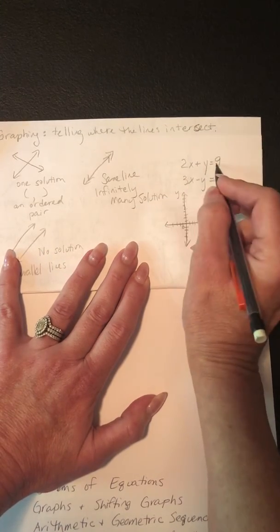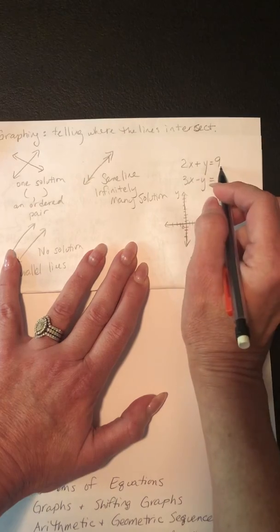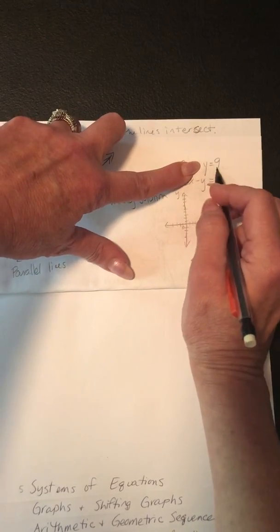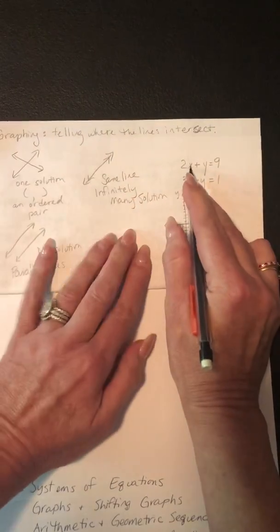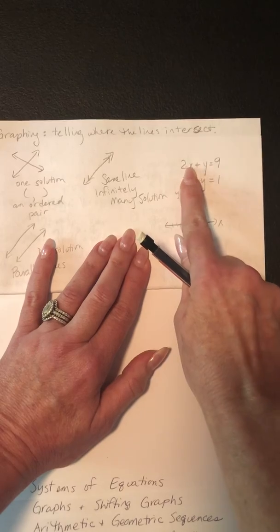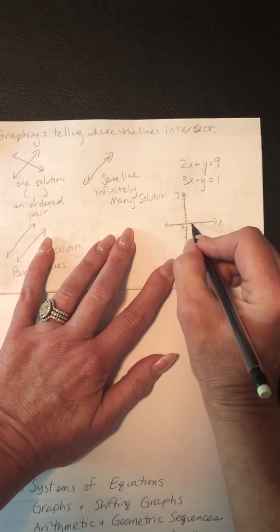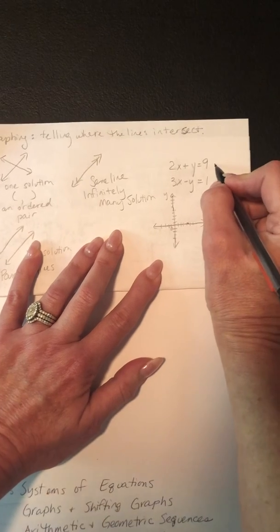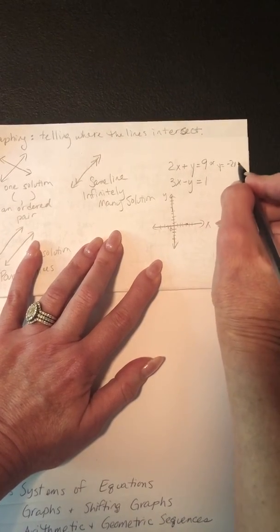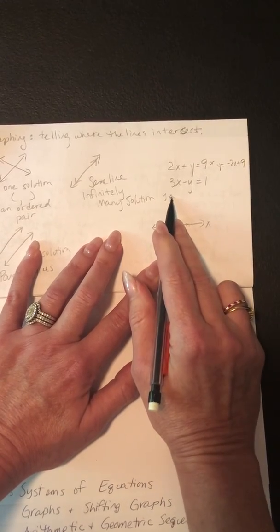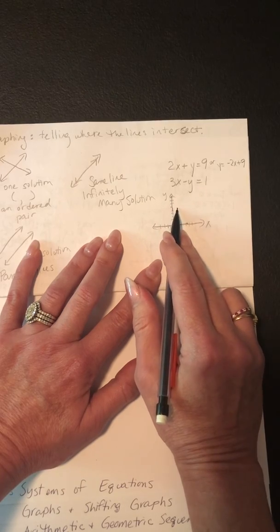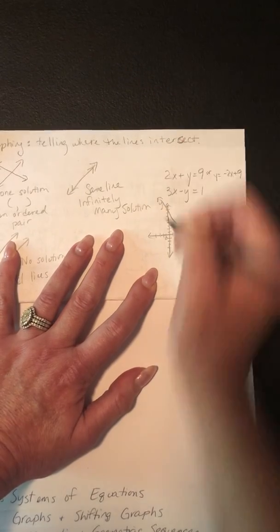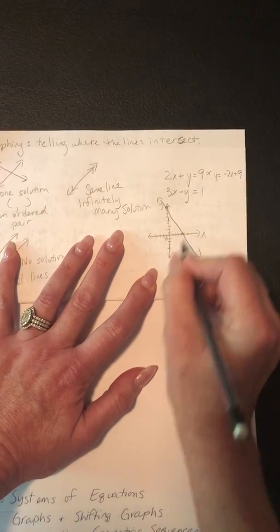If I was going to graph the first equation by x and y intercepts: the y-intercept is the value of y when x is 0, so the y-intercept is 9 — there's a dot there. For the x-intercept, put in 0 for y: 2 times what equals 9, so that's 9 halves, or 4 and a half. Alternatively, get y alone: y equals negative 2x plus 9, so the y-intercept is still 9 and the slope is negative 2, going down 2 right 1 repeatedly. Either way you get a line.